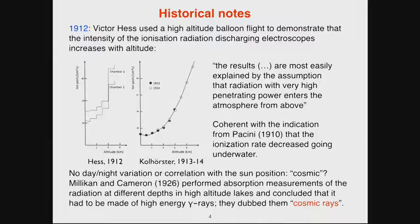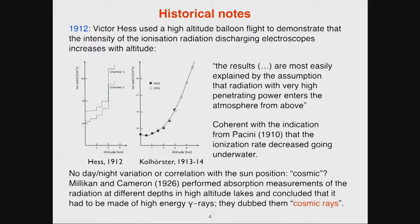Victor Hess was a brave guy who decided to put his electroscope on a balloon and do a high-altitude flight — he went up to six kilometers. He noticed that this radiation increased in intensity as he went higher in the atmosphere, rising sharply after an initial dip. Kolhörster, just two years later, went to even higher altitudes and confirmed this beautiful correlation.